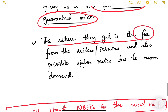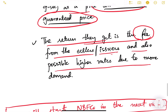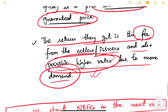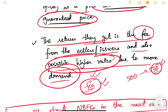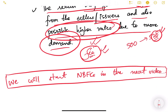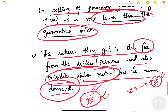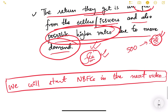The return for this risk is the fee from the sellers or issuers and also the possible higher rates due to more demand. For example, if guaranteed price is 500 but the underwriter sells at 520, that 20 rupees is possible profit plus the guaranteed fee from issuers. This activity is known as underwriting. So underwriting means acting as an agent where you guarantee a price to securities sellers for a fee, then sell those products to buyers at market price — bearing the risk involved.